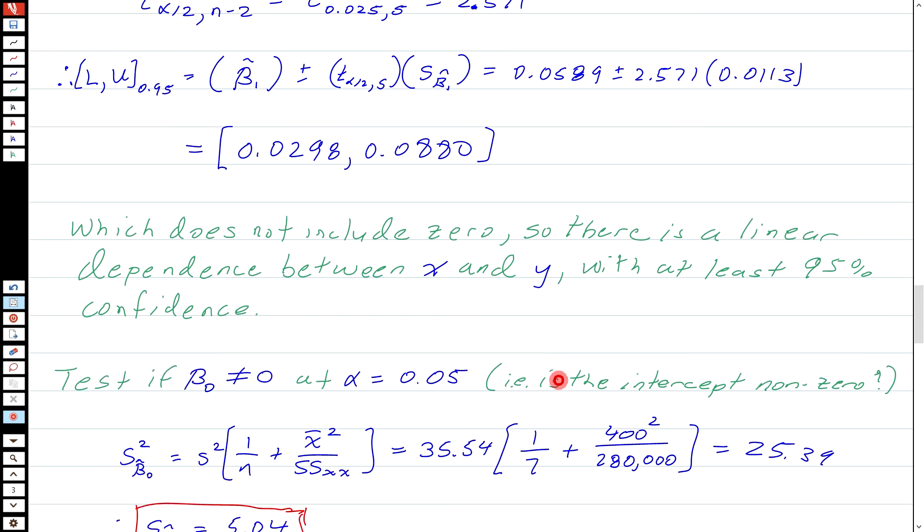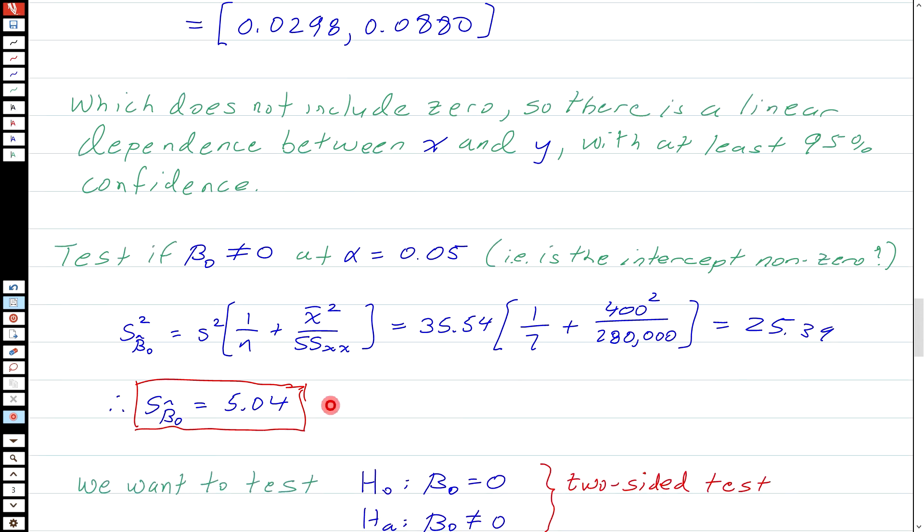We can also do a test now on whether the intercept is significant. Sometimes it's not clear whether that intercept could be zero, in which case we just have a relationship Y equals beta 1 X instead of having an intercept. So let's test to see if beta 0 is significantly different than zero at a significance level of 0.05, i.e. is the intercept non-zero. And for this, we need to know what the sample standard deviation of beta 0 is. And let's look at the sample variance of beta 0. We have an equation for that we developed in our last lecture, and it's also in the summary pages, is S squared, 1 over N plus X bar squared over SSXX. We know all of these things. Plug in, S squared is 35.54, N is 7, so 1 seventh plus 400 squared divided by 280,000, and that gives me 25.39. So the sample standard deviation of beta 0 hat is 5.04.